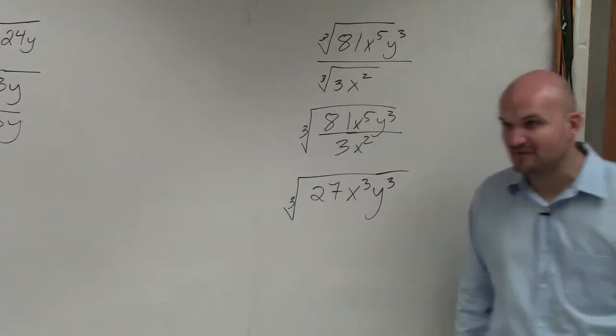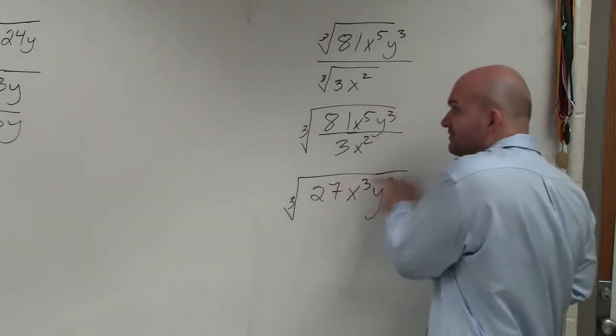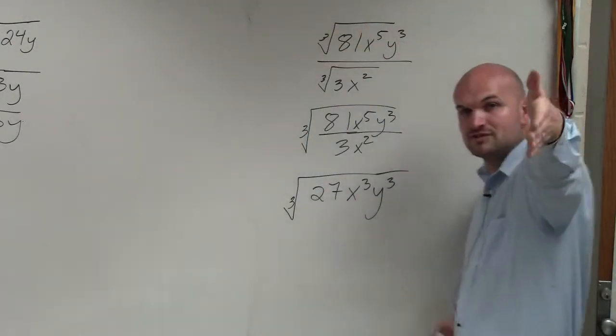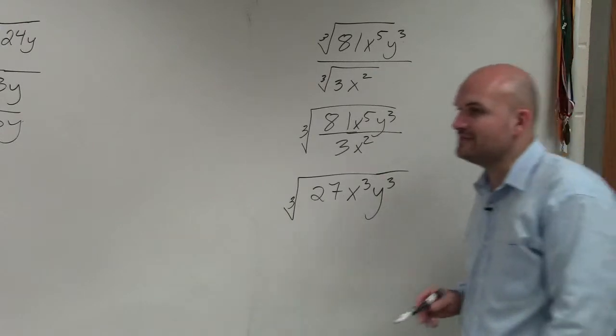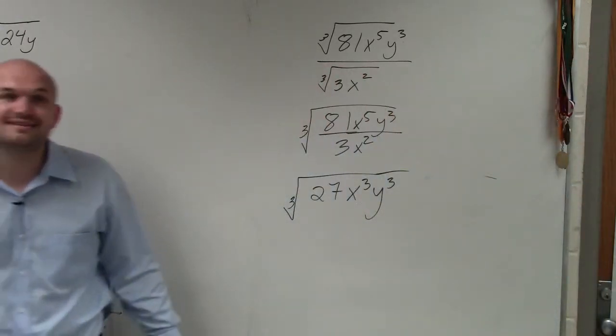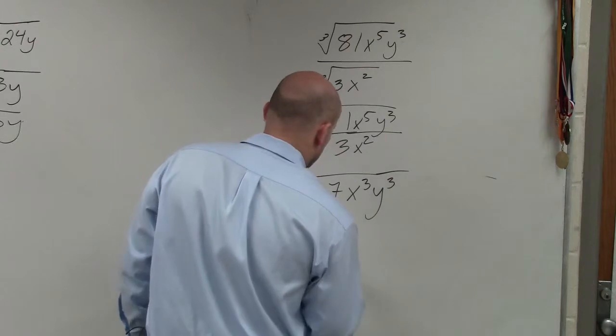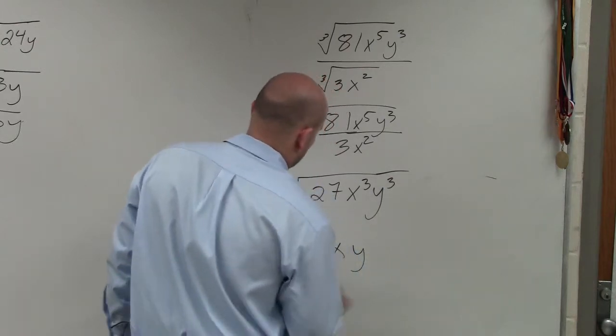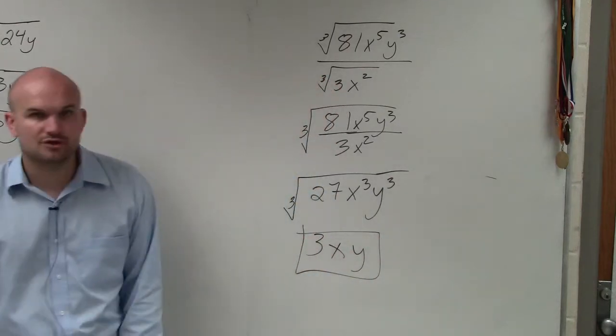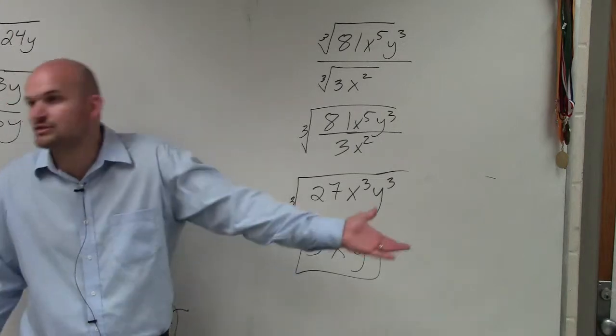Now I can take the cube root of each one of these, just like I did on my first examples. So the cube root of 27 is what number multiplied by itself 3 times gives you 27, which is 3. And then this becomes x and y, right? The cube root of x cubed is just x. Cube root of y cubed is just y.